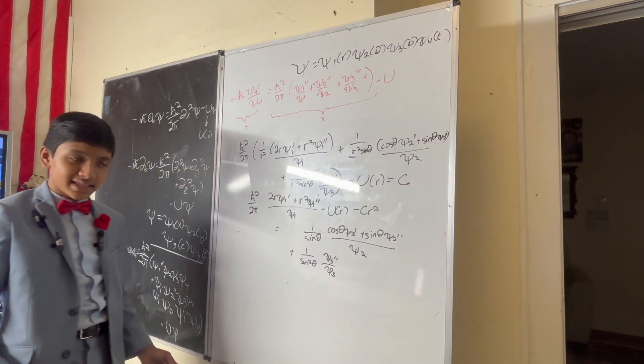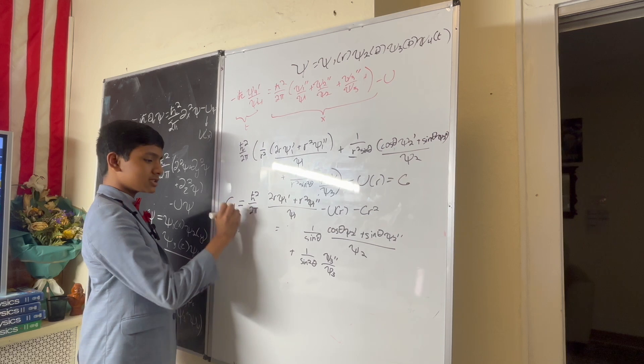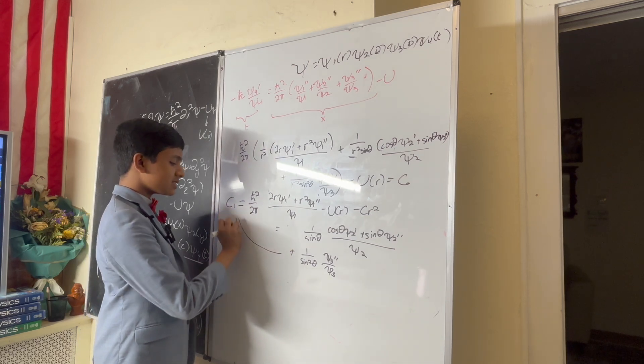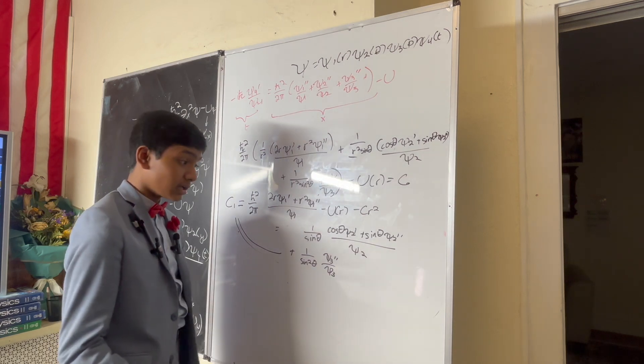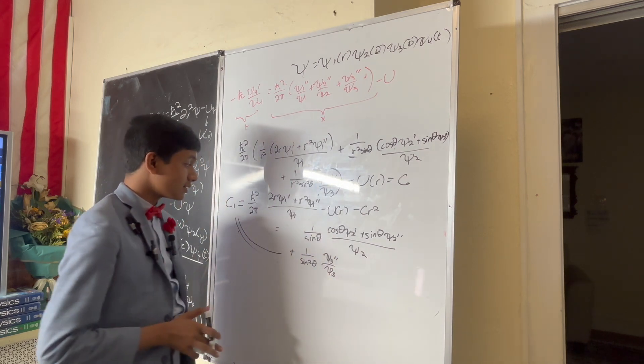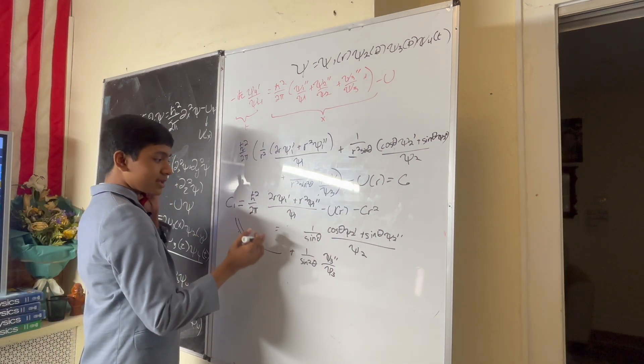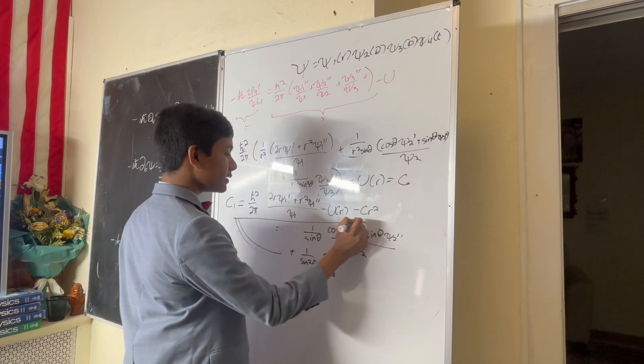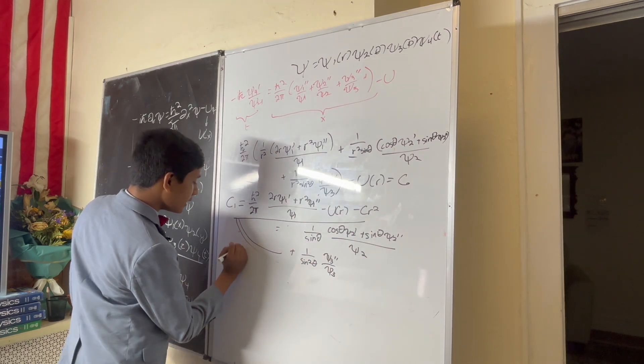And, as bleak as things seem, this is now equal to another constant, which is the same as this, because this is a function of r, this is a function of phi and theta. So, now, I mean, what do we do? Well, things become a lot easier from here for this side, because we can multiply both sides by psi 1.